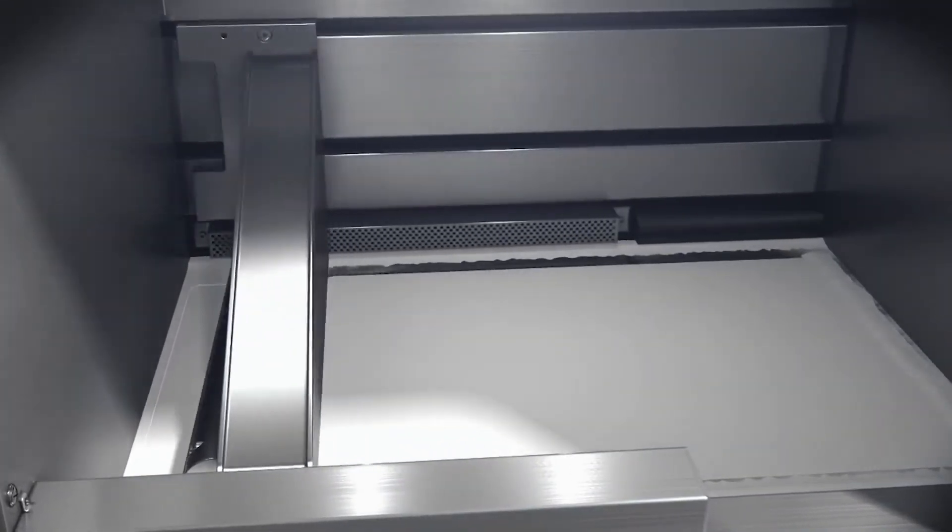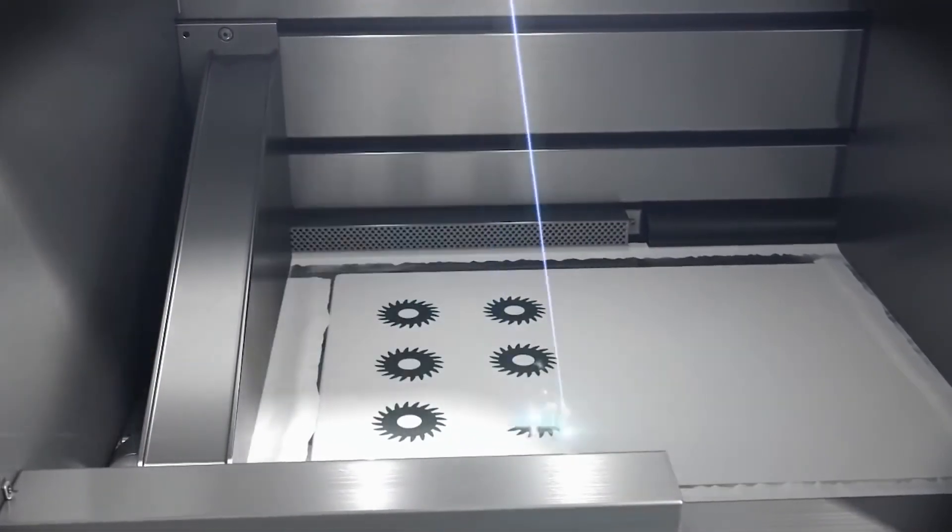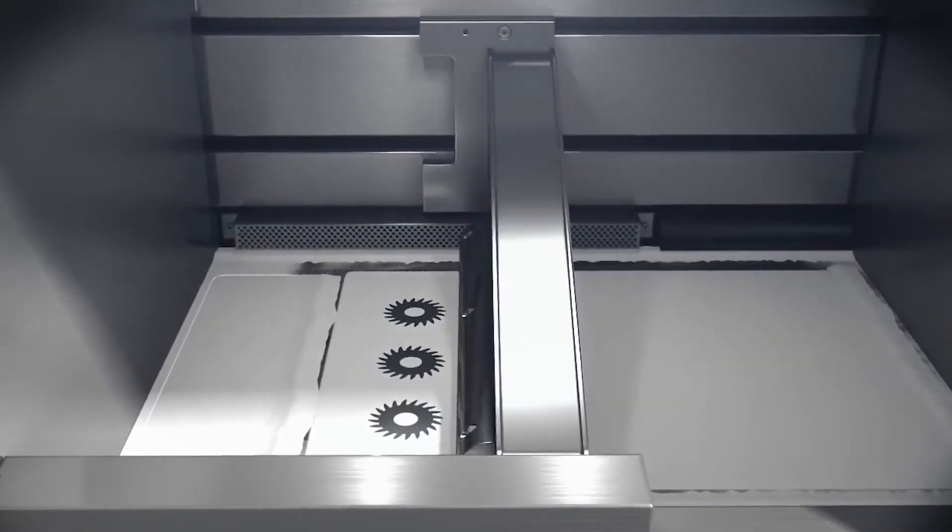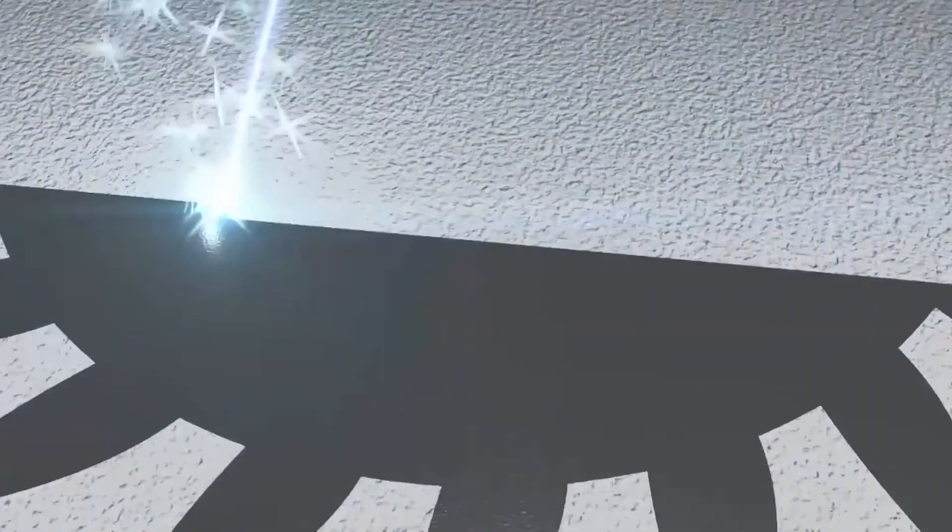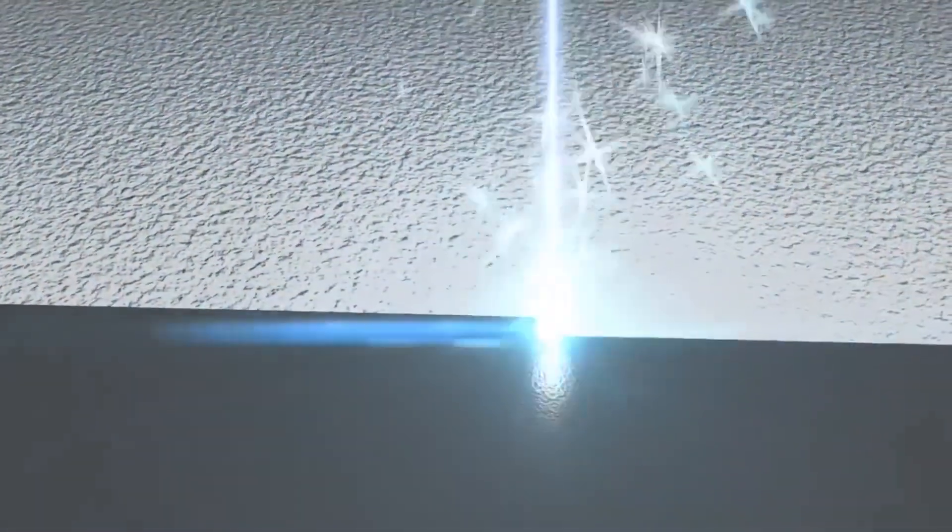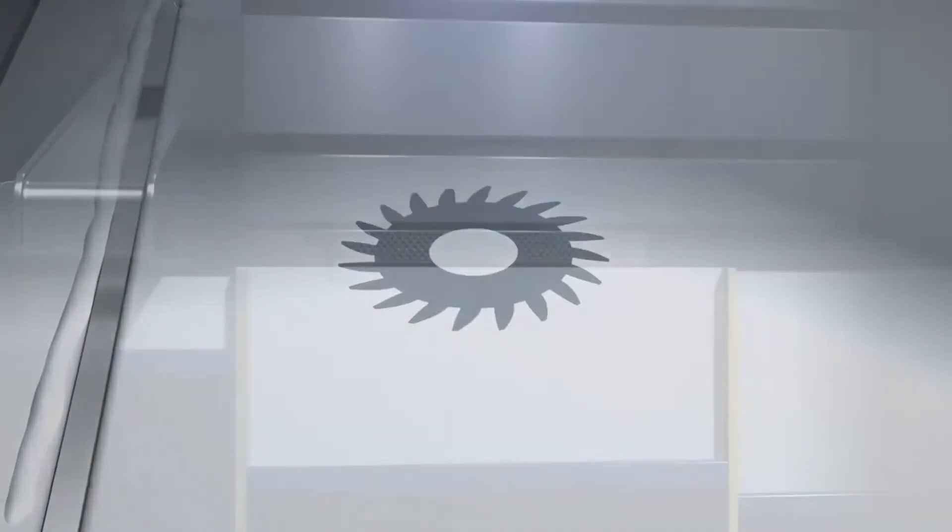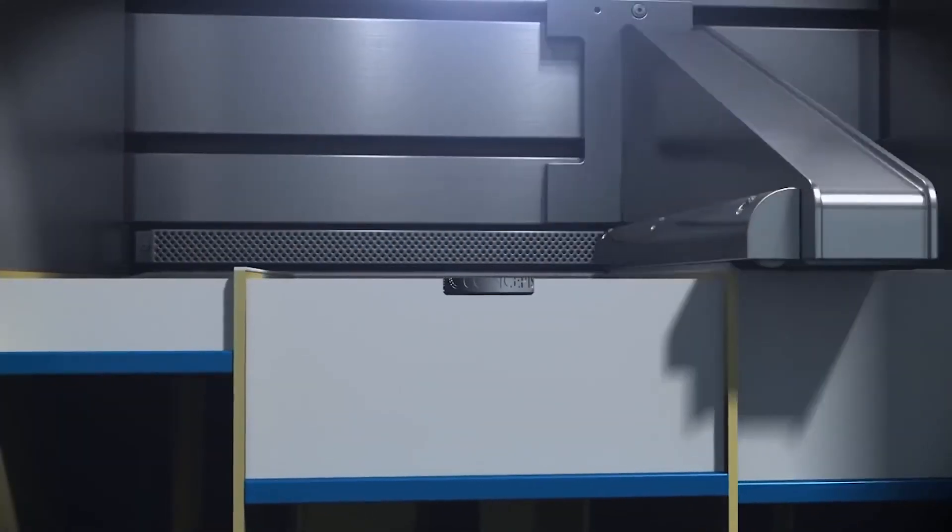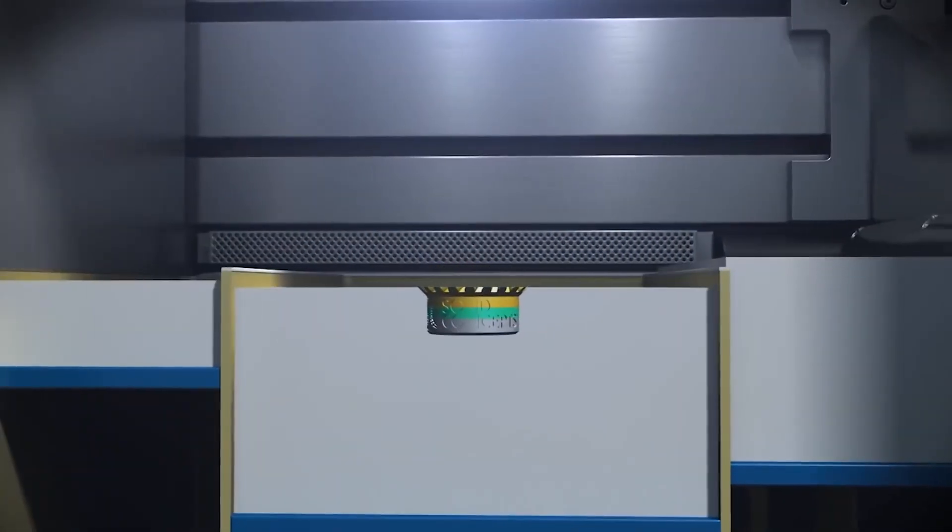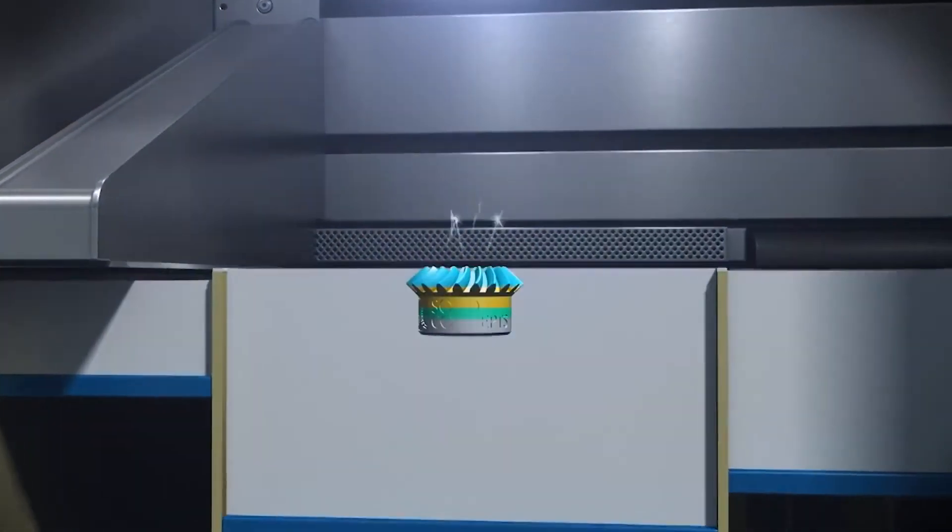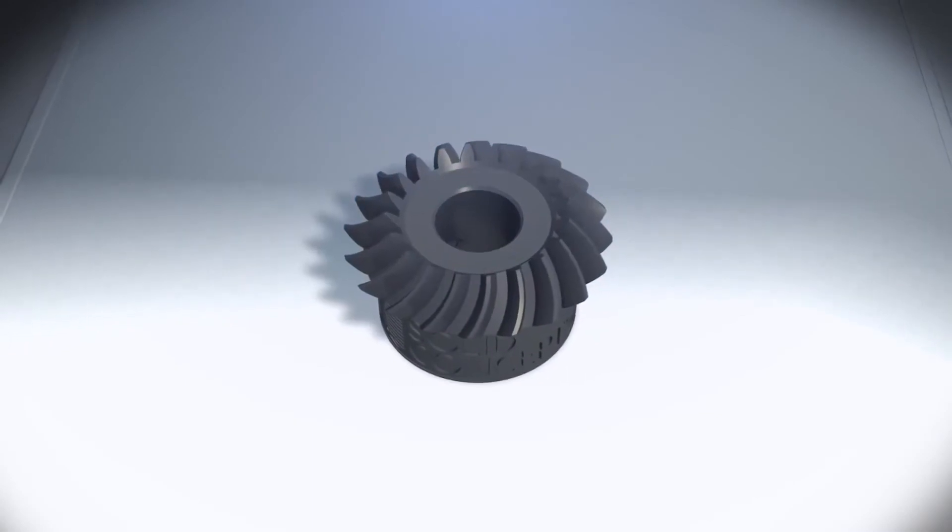A recoater assembly pushes powdered metal material from the powder supply to create a uniform layer over the base plate. A laser then draws a 2D cross section on the surface of the build material, heating and fusing the material. Once a single layer is complete, the base plate is lowered just enough to make room for the next layer. More material is raised from the cartridge and recoated evenly upon the previously sintered layer.